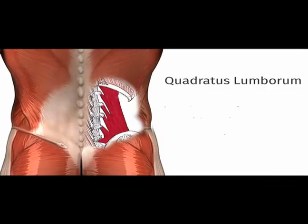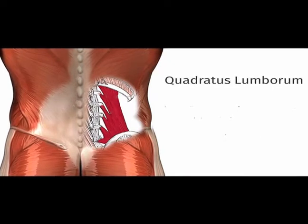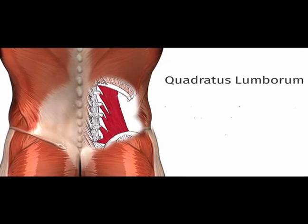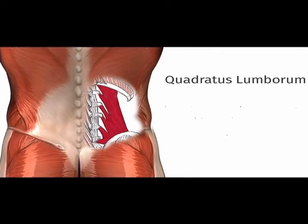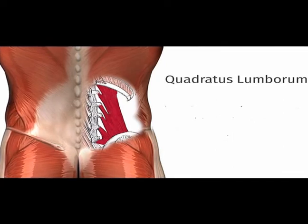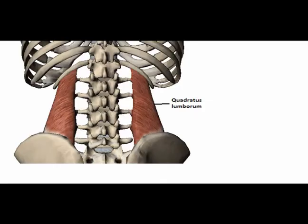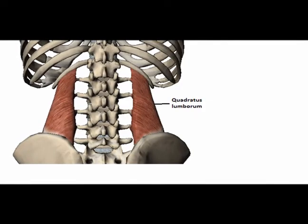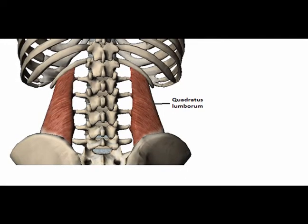Its concentric actions: when contracted bilaterally, it performs lumbar extension and ribcage depression. When contracted unilaterally — meaning one side at a time — it performs ipsilateral lateral flexion. For example, if the right quadratus lumborum is contracted, it performs right lumbar lateral flexion.